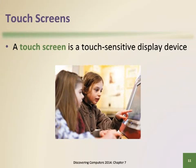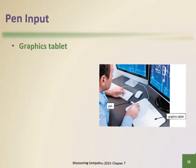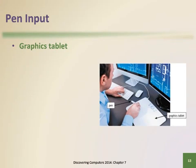A touch screen is a touch-sensitive display device; users interact with these devices by touching areas of the screen. A stylus or digital pen looks like a ballpoint pen but uses pressure to write text, draw, or make selections. A graphics tablet, also called a digitizer, is an electronic plastic board that detects and converts movements of a stylus or digital pen into signals that are sent to the computer.